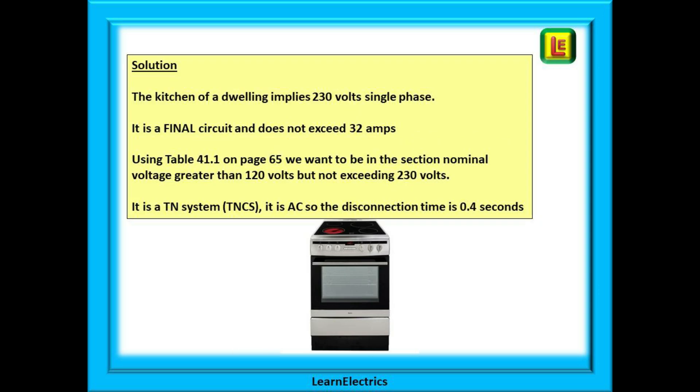We are expected to make some assumptions. In a kitchen in a dwelling implies 230 volts nominal and single phase. We are expected to make that connection. We can also assume it is a final circuit and it is not exceeding 32 amps. Looking at table 41.1 on page 65 we choose the second block. The nominal voltage is greater than 120 volts but does not exceed 230 volts. It is a TN system. It is AC and where the column and row cross is the first part of our answer, 0.4 seconds.